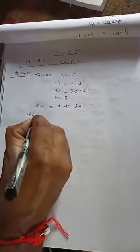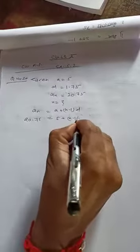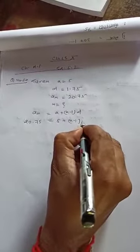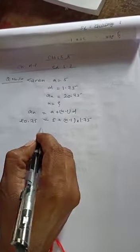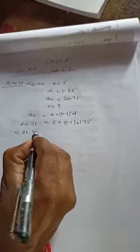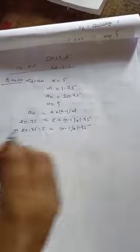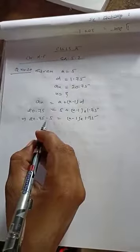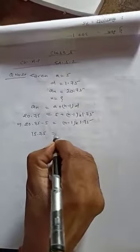20.75 = 5 + (n-1) × 1.75. First we subtract 5 from both sides: 20.75 - 5 = (n-1) × 1.75. This gives us 15.75 = (n-1) × 1.75.